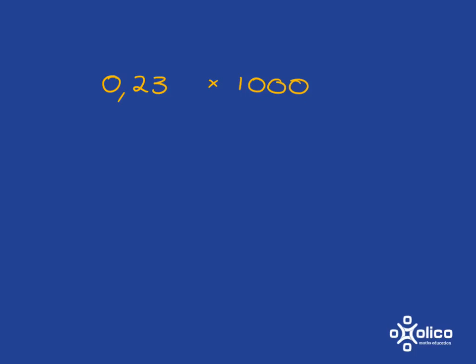And so what we're going to do is we're going to move the comma and we're going to move it 1, 2, 3 to the right, and put a 0 in there. And so we get 2, 3, 0 as our answer.